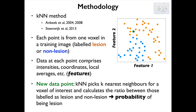When a new voxel from a test image comes in (shown in green), we calculate these two features and place the voxel in the feature space. The k-nearest neighbor algorithm looks at k nearest neighbors and counts how many were labeled as lesions and how many as non-lesions in the training set — the ratio is the probability of that voxel being a lesion. In this example, k equals 9, so we look at the 9 closest points; 7 of them were labeled as lesions, giving a probability of 7 out of 9, or 78%. We repeat this for each voxel of the new image and end up with a probability map.